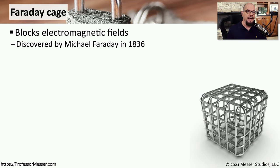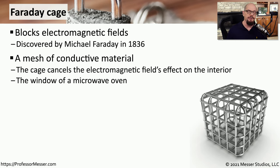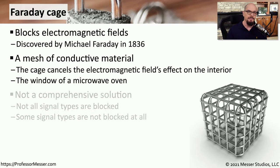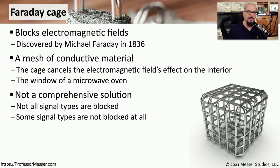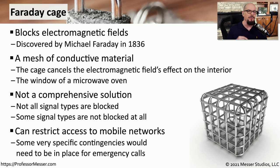Some specialized environments may have a Faraday cage. This is a method of signal suppression originally created by Michael Faraday in 1836. It's a mesh of conductive material that either restricts or prevents radio signals from traversing through this particular cage. A good example is the window on a microwave oven, which allows you to see in but prevents any of those microwaves from getting out. This is not a solution that blocks every type of radio signal, and you also have to keep in mind that if you're blocking radio signals, you could be blocking the ability for someone to call 911 on their mobile device. There always needs to be a way for someone to gain access to emergency services, even if you're blocking those signals.